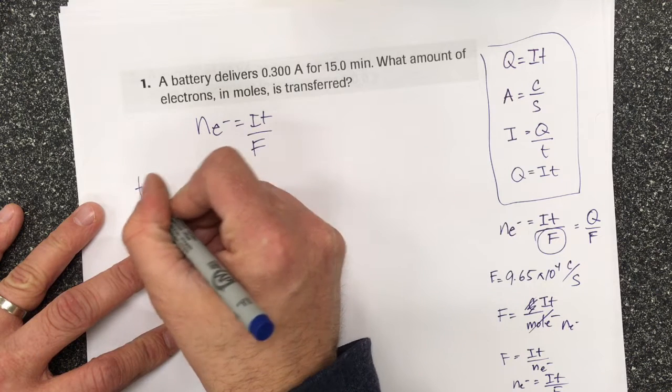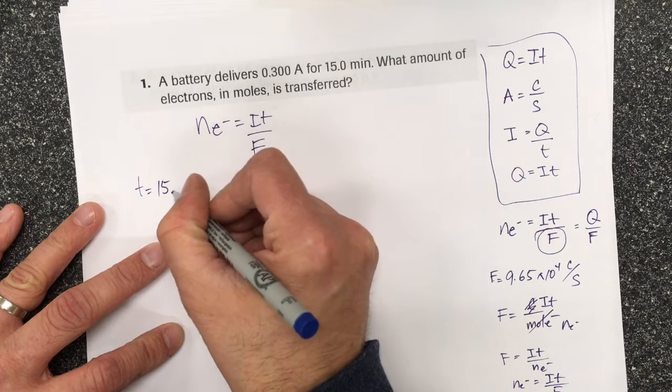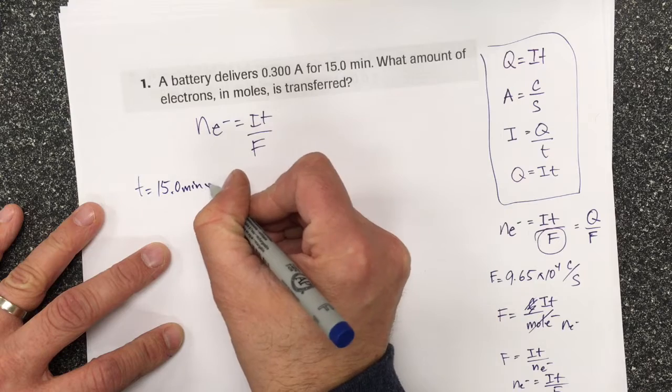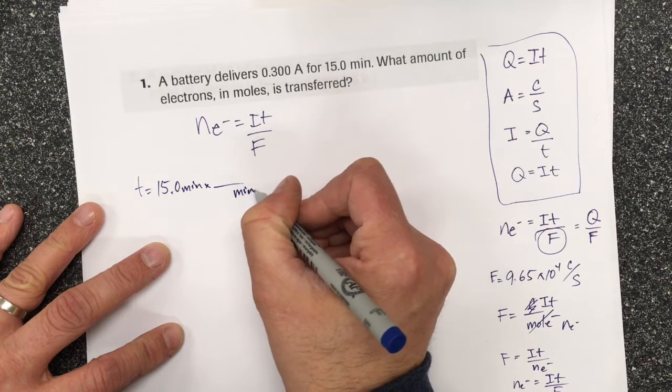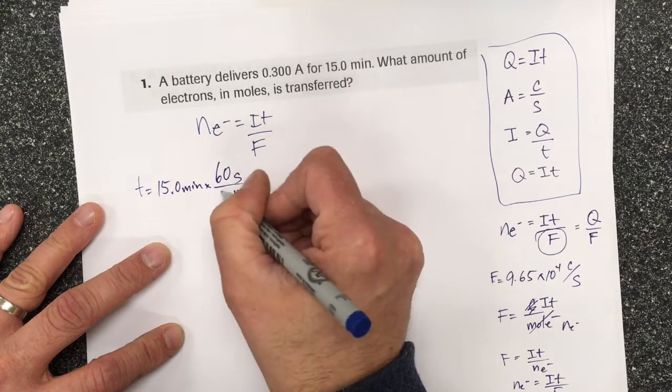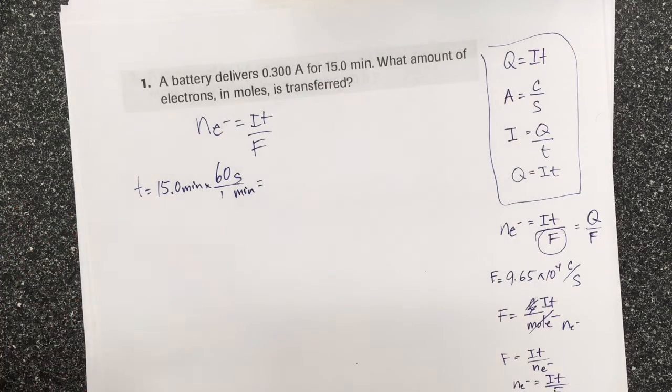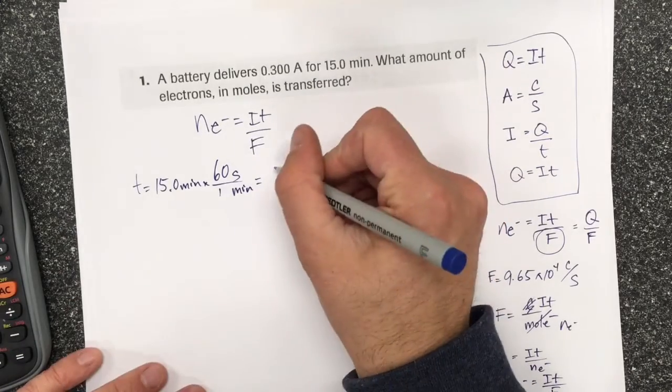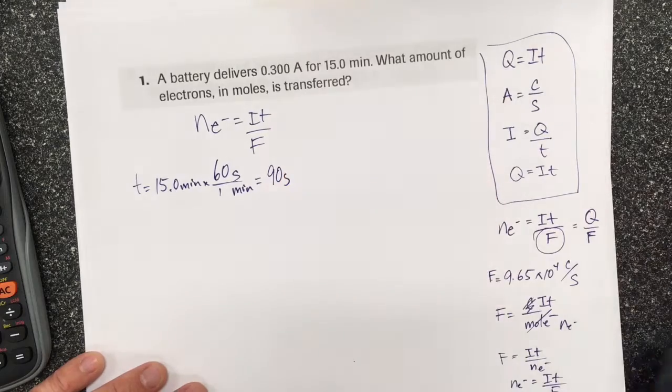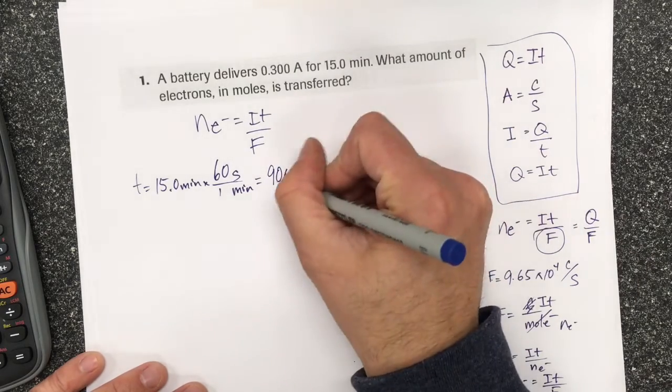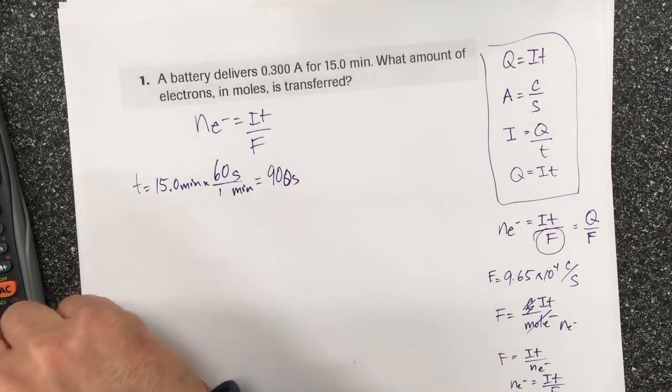So the time is going to be 15.0 minutes. I want to get rid of the minutes and I want to be left with seconds. 60 seconds in one minute. And so I'm gonna find out that that is 900 seconds in 15 minutes.